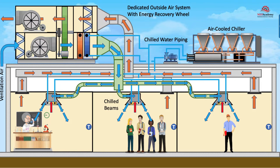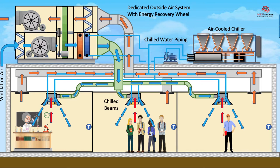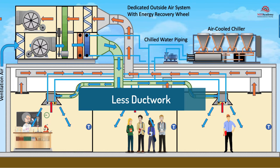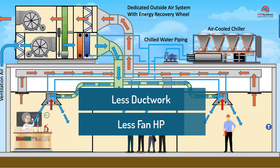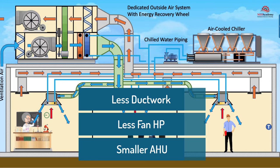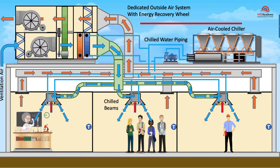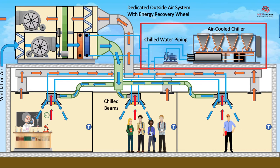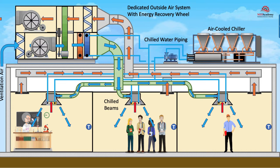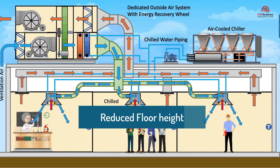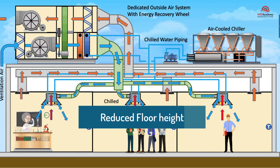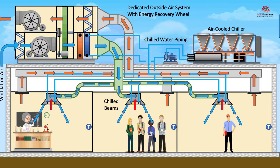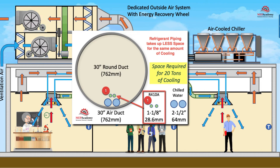Since the cooling is being done at the space level and not back at the air handling unit, less ductwork and fan horsepower are required, including a smaller air handler. Chilled water and ventilation air will need to be brought to the space. This could also allow for a reduction in floor-to-floor height, as less space is taken up in the attic for larger air ducts. More energy can be carried in a small pipe than a large duct.